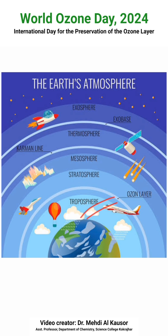The troposphere contains most of our weather — clouds, rain, and snow. It contains about 75 percent of all the air in the atmosphere and almost all the water vapors that form clouds and rain. The next layer is the stratosphere, which extends up to 50 kilometers from the troposphere. It contains much of the ozone gas in the atmosphere, making this region very important in our discussion.